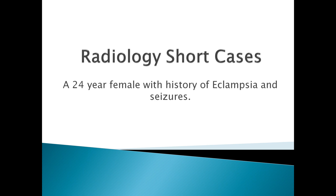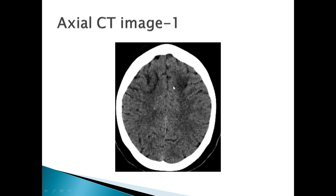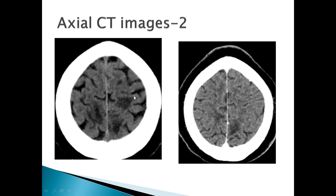Hello friends, welcome back to Radiology Short Cases. Today we have a neuroradiology case: a 24-year-old female with history of eclampsia and seizures presented in emergency OPD, and her NCCT head was performed. On CT we can see ill-defined hypodensities involving bilateral frontal lobes, predominantly within the white matter. A second set of images shows almost similar findings — ill-defined white matter hypodensities involving frontoparietal lobes in a parasagittal location. Findings were substantive of vasogenic edema.